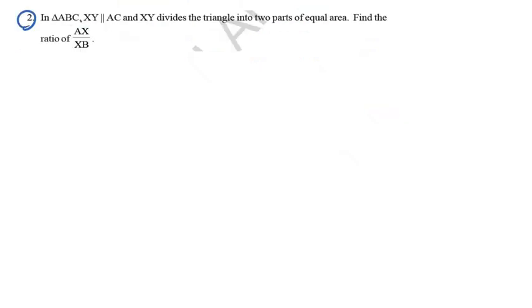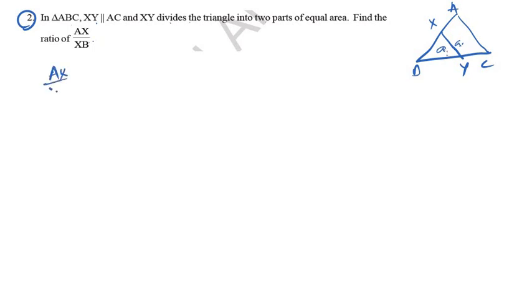Second question: In triangle ABC, XY is parallel to AC. XY divides the triangle into two equal parts of area. We need to find the ratio AX/XB. Drawing triangle ABC with XY parallel to AC, XY divides the triangle into two equal area parts — the total area split equally. We need to find the ratio AX divided by XB.